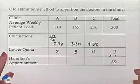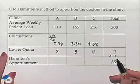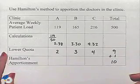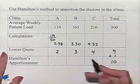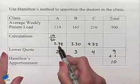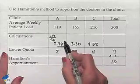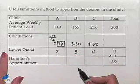And that's going to be the clinic with the greater decimal part. And that's going to occur for clinic A, because we notice that clinic A has a decimal part which is larger than the other two clinics.